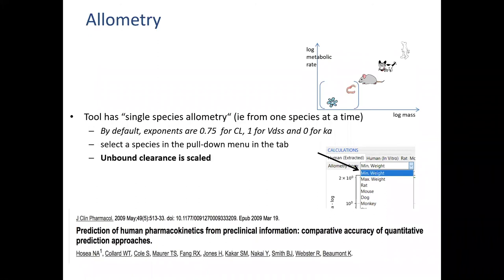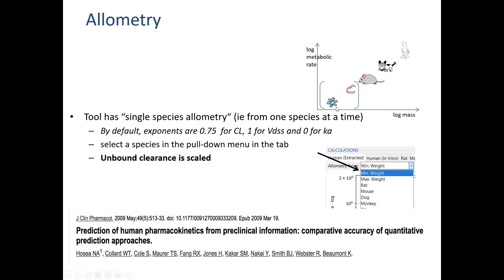Allometry is based on the idea that a lot of properties associated with animals — metabolic rate, for example — scale with log mass. Log metabolic rate against log mass gives a straight line, which has been borne out over time. In the PK tool you can do single-species allometry — one species at a time — rather than averaging across two or three species. An advantage is that you can do it from mouse and then from rat and see how big a difference you get.